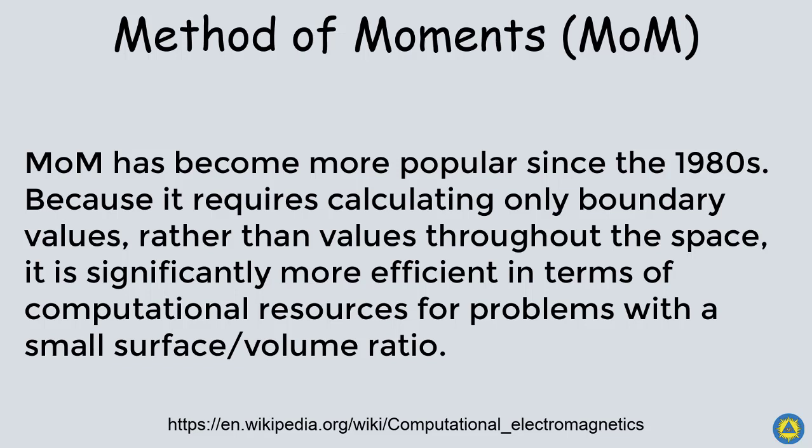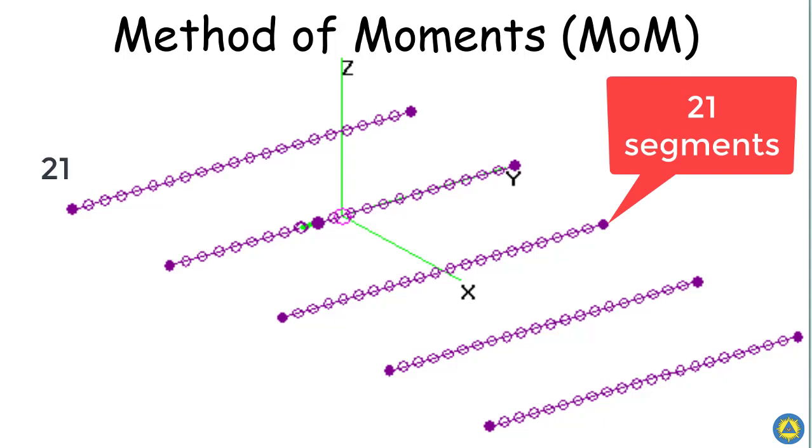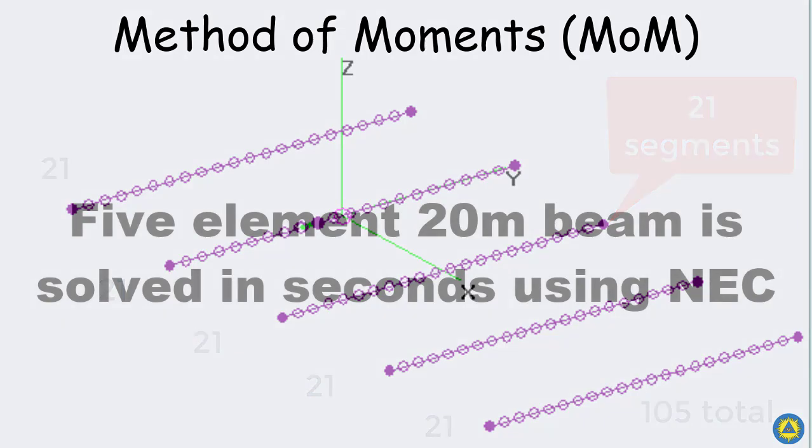Because of this approach, it is quite a bit more efficient, especially in the age of older computers where processing was very valuable. It breaks the problem down. Here's our five element beam with the elements broken down into 21 segments each, and each segment is related to each other through mathematics. Consider each piece like its own individual antenna that has a relationship with every other piece in our model.